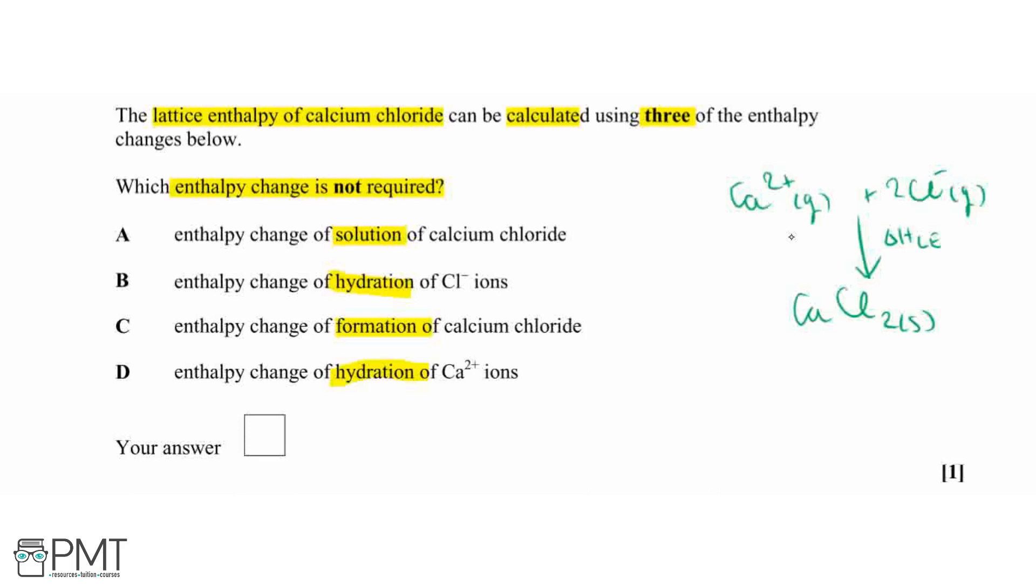Then our enthalpy change of solution is if we go from the solid calcium chloride and we dissolve that in water to get the aqueous compound here. Now, these can be exothermic or endothermic, so I'm just going to do a downwards arrow for the purpose of this diagram. So this is our enthalpy change of the solution for the calcium chloride.